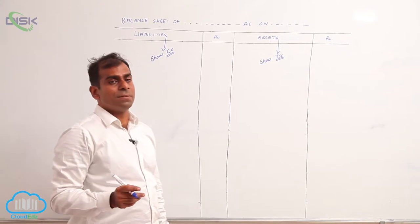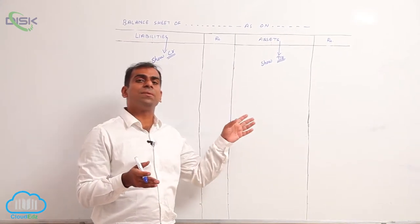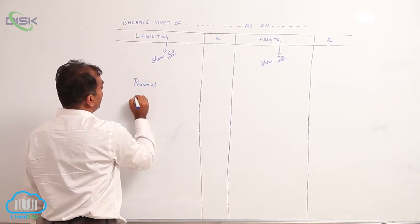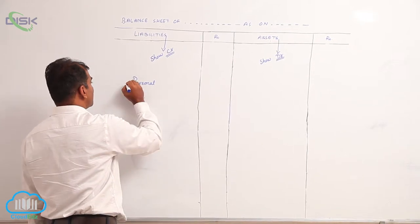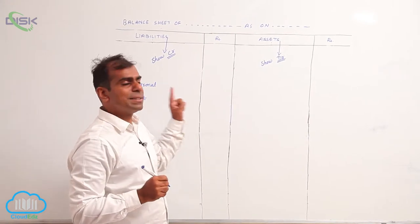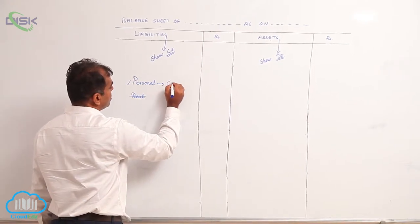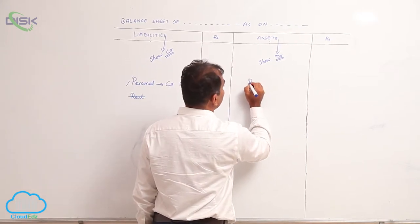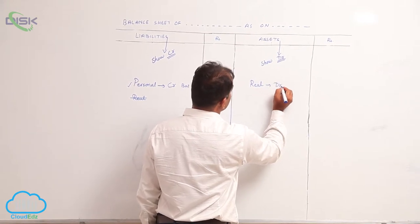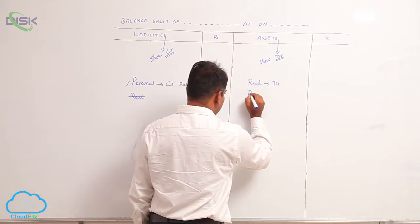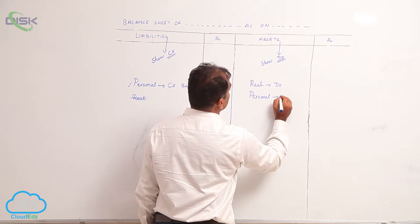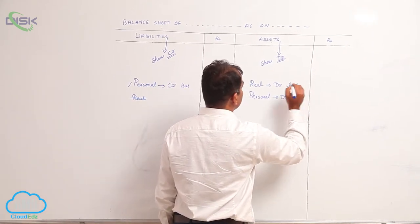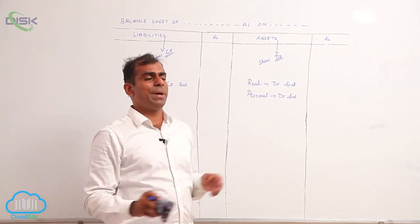Based on the basic categorization of accounts, all nominal accounts are shown in Trading and P&L. The leftover — personal accounts and real accounts — are shown in the balance sheet. Most liabilities are personal accounts, and when a personal account shows a credit balance, it is shown on the liability side. Most assets are real accounts showing debit balances, shown on the asset side. Similarly, personal accounts showing debit balances are shown on the asset side.